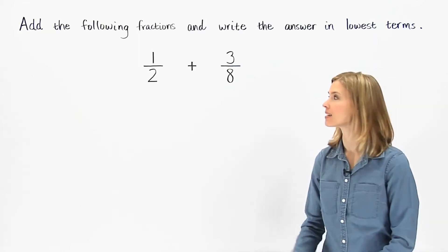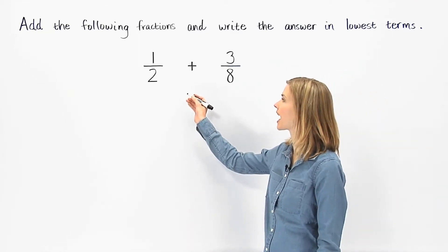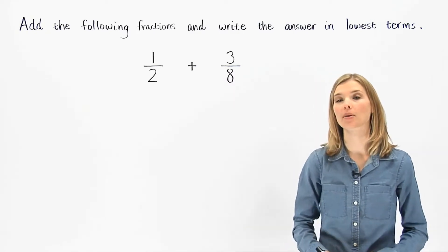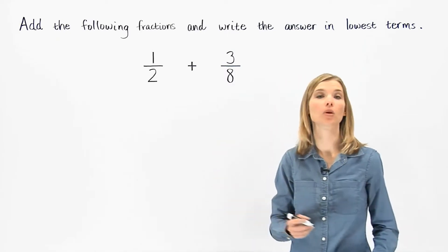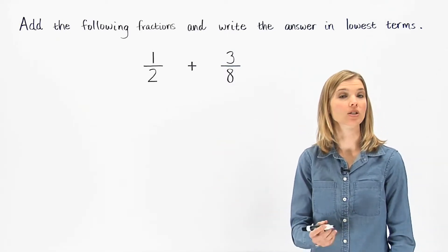To add unlike fractions, such as 1 half plus 3 eighths, first find a common denominator. The common denominator of 2 and 8 is the least common multiple of 2 and 8, which is 8.